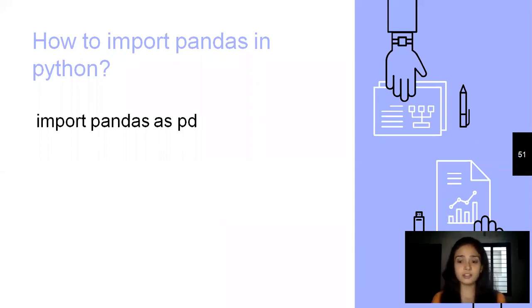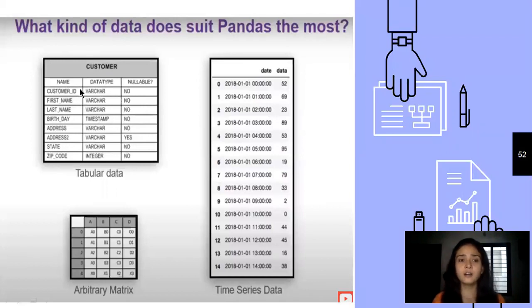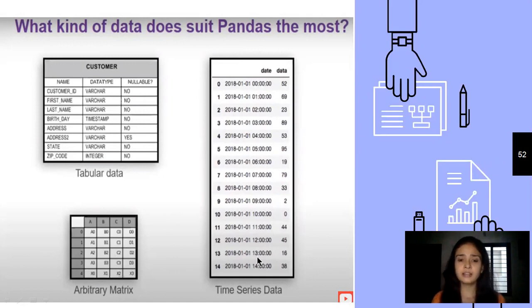To import the pandas library into Python, you write: import pandas as pd. What kind of data does pandas support? Pandas supports tabular data, time series data, and arbitrary matrix data. Tabular data has column name labels and rows. Matrix data has different row indexes and columns. Time series data has date and time present.